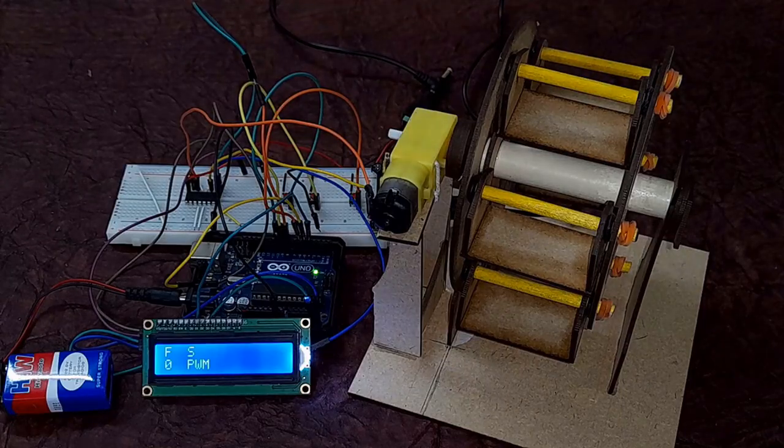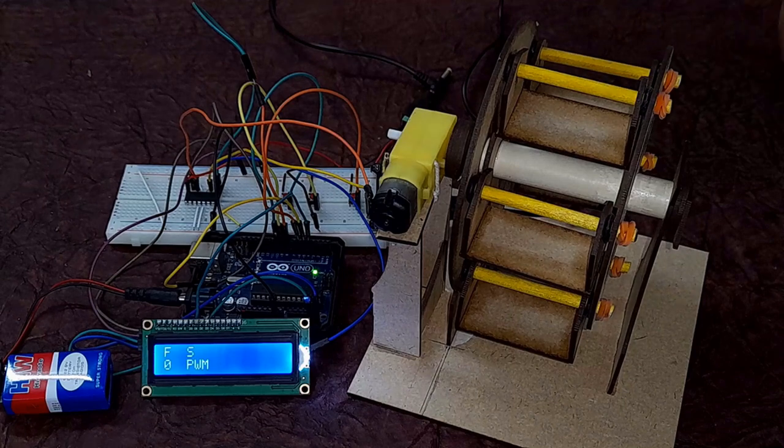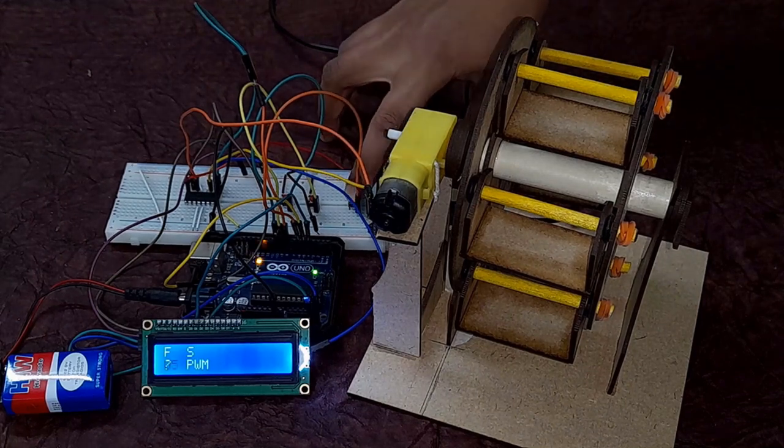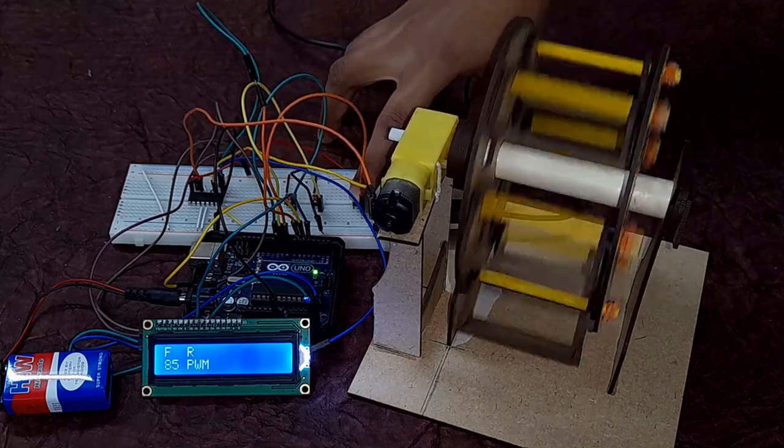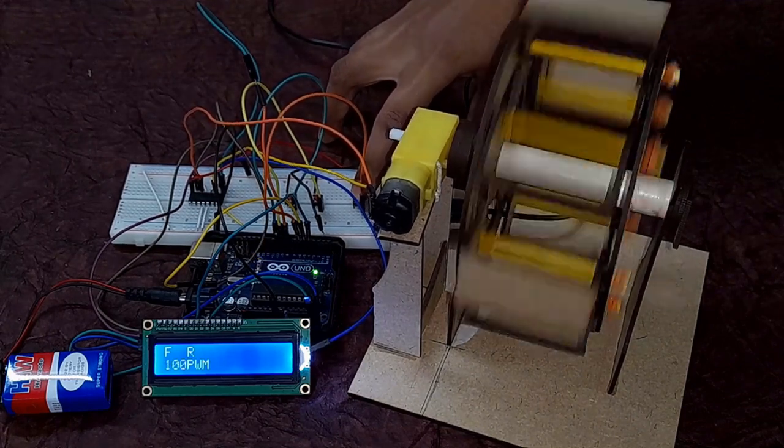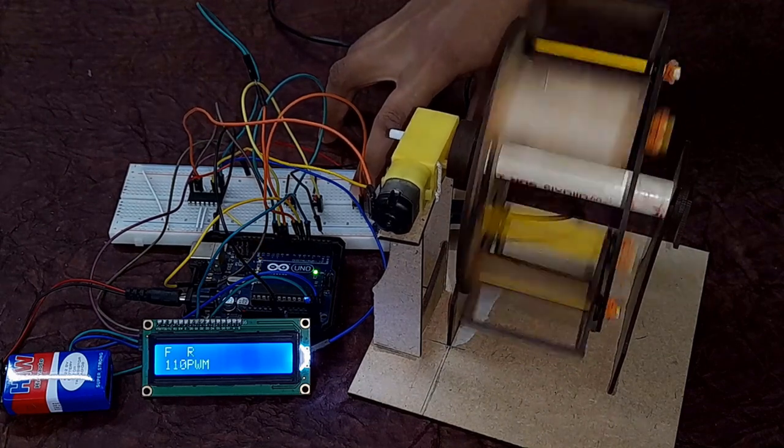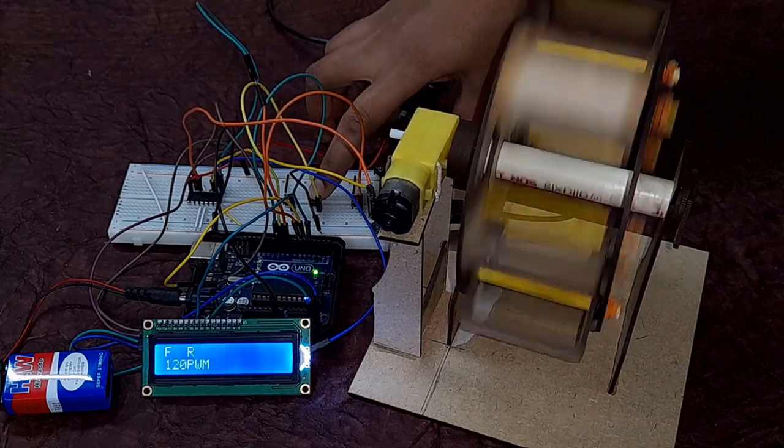So here is our model set to forward and the state is S or stopped, that is the speed happens to be 0. We press the tactile switch to ramp up the speed. It starts from 75 and increases in steps of 5 right up to 120. On reaching 120 you would find that the speed doesn't increase any further.